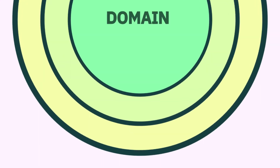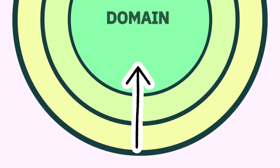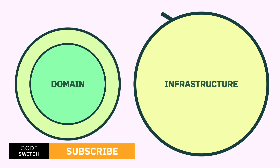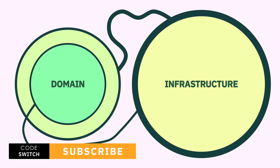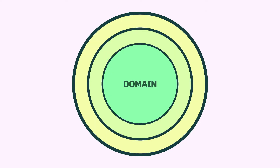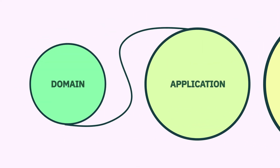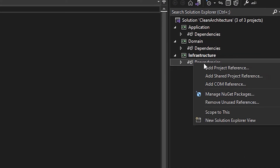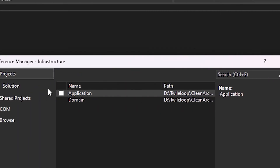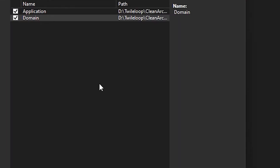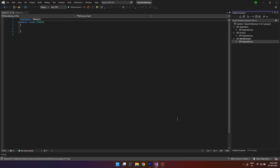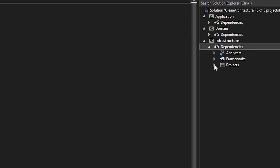Let's analyze the dependency flow now. Clean architecture only allows dependency to flow from outwards to inwards. This means our outer layer infrastructure can depend on both the domain and the application layer, whereas the application layer can only depend on the domain layer, and the domain layer can't depend on anything else. To implement that, right click on the infrastructure project and add the project dependency to both the application and the domain layer. Now if you see, the infrastructure has the dependency with both application and the domain layers.